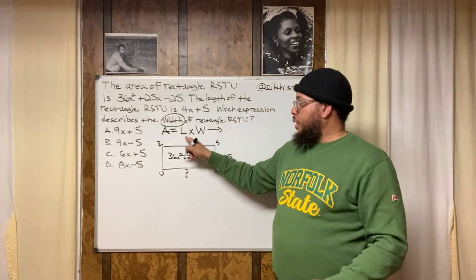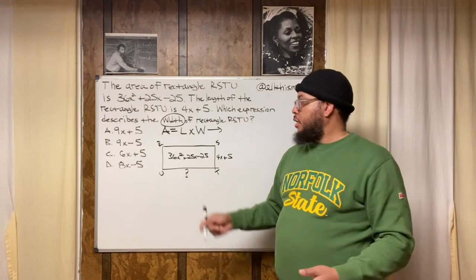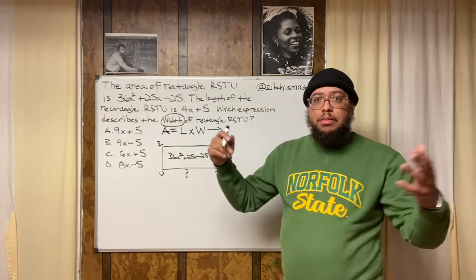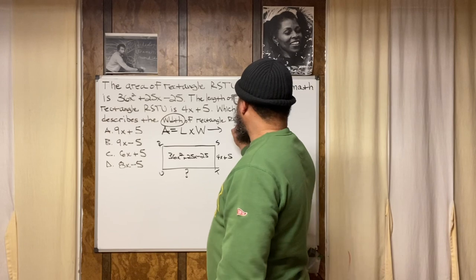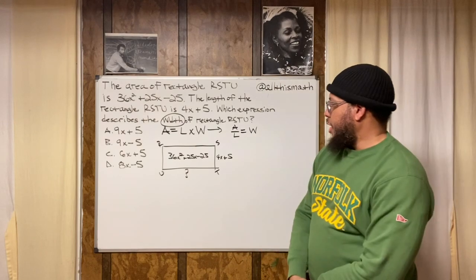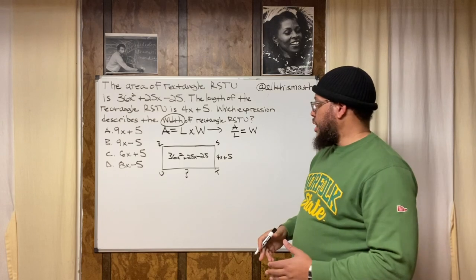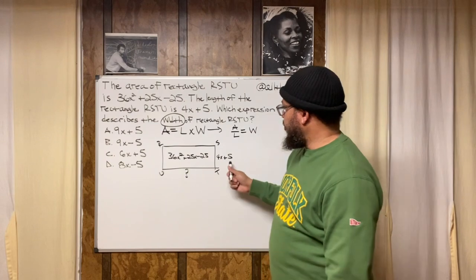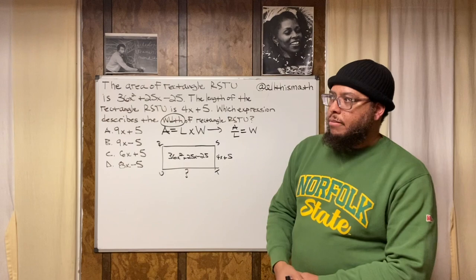I divide by L on the right, which causes the L's to cancel out, leaving just W. But I have to do the same thing on the left side — I've got to keep it balanced. So A over L equals W. That's the formula I'm going to use: take the trinomial and divide it by the binomial to get the width.